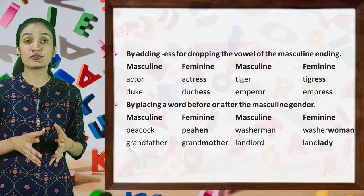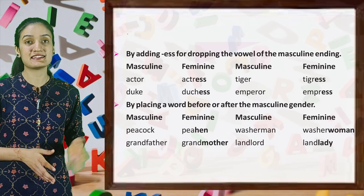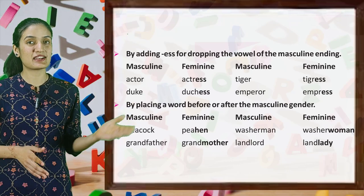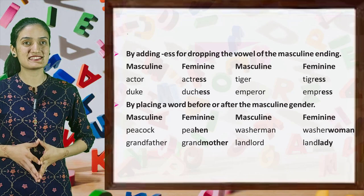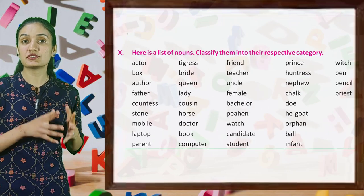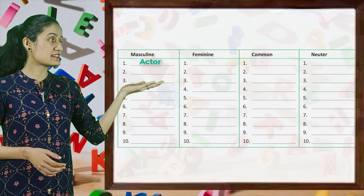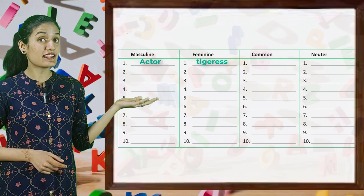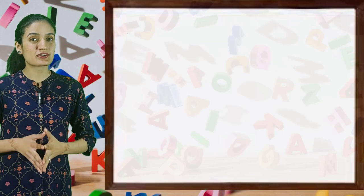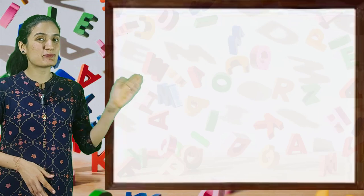By placing a word before or after the masculine gender: peacock → peahen, washerman → washerwoman, grandfather → grandmother, landlord → landlady. Here is a list of nouns — classify them into their respective categories. So kids, you can classify them as actor in masculine, tigress in feminine, and friend in common. That's all for today's class. We will meet next time. Bye-bye.